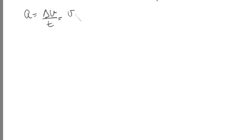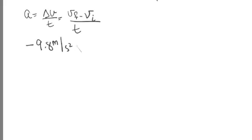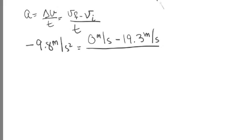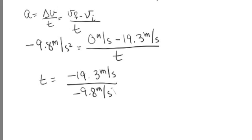Now we're going to calculate how long it takes to reach the top of the arc. To do that, we use the definition of acceleration: delta V equals the final velocity minus the initial velocity divided by the time. Because we're near the surface of the Earth and the object is rising, the acceleration is negative — it's going to be negative g, minus 9.8 meters per second squared. The velocity at the top of the arc is 0, and the initial velocity was 19.3 meters per second, as we just calculated. Solving for T gives us a time to the top of the arc of 2.0 seconds.